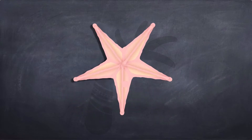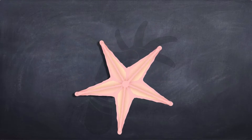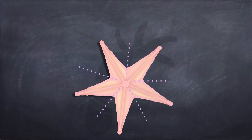The starfish is symmetrical too. Just like with the crab, you can draw a line through it and the two sides are exactly the same. But you can also draw five lines from its center outwards and each of the five pieces look the same as well.